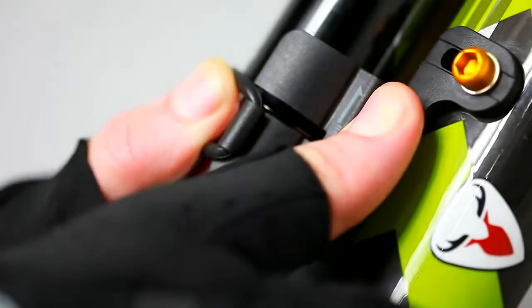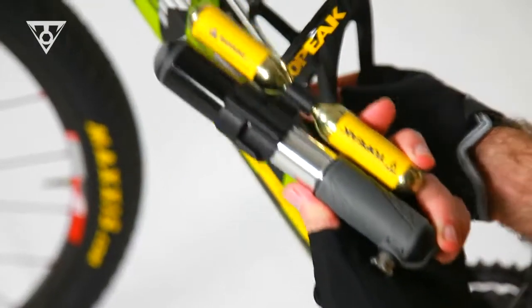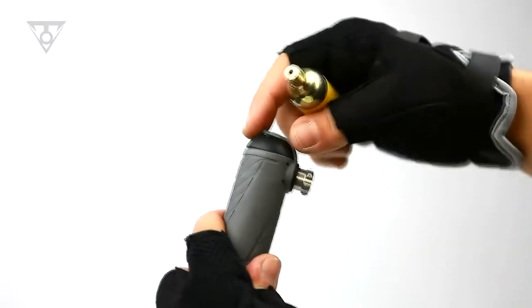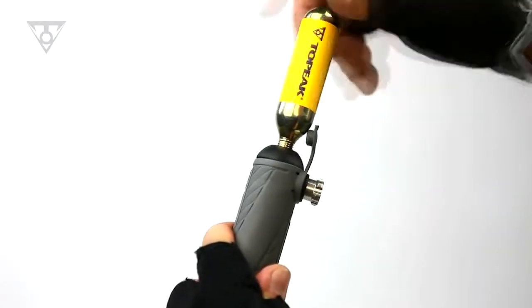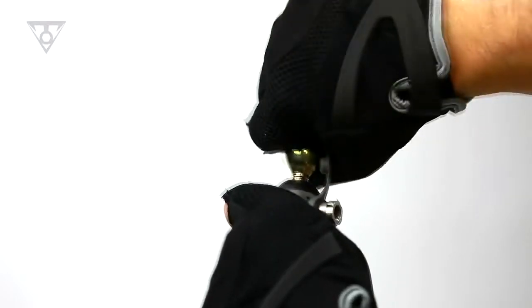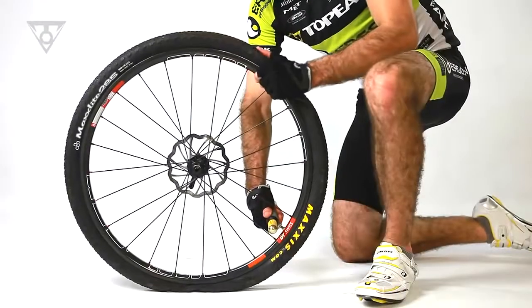The supplied mounting bracket makes it easy to mount and remove the Hybrid Rocket MT from your bike. For fast inflations, you simply thread a 16 or 25 gram CO2 cartridge directly into its innovative inflator head and proceed to fill your tire.